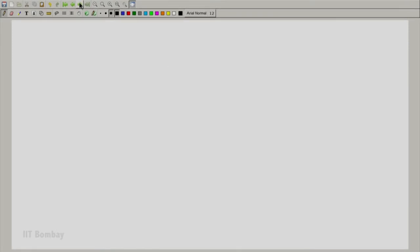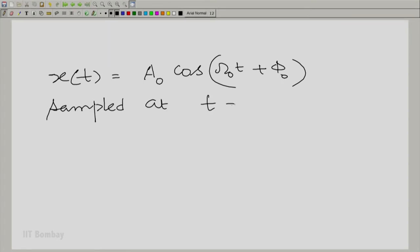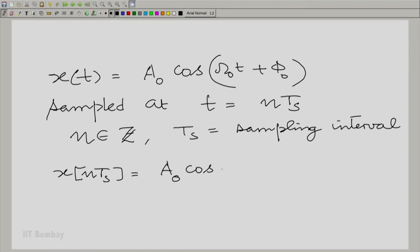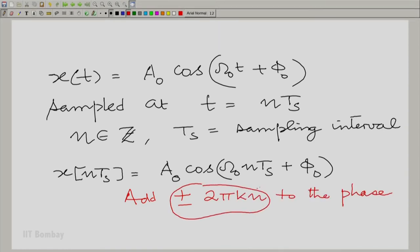Where will these omega_kj's come from? Well, they come from the fact that x(t), which is A_0 cos(omega_0 t + phi_0), when sampled at t equal to nT_s, gives you x[nT_s].